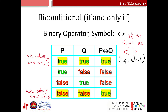A bi-conditional statement is a statement that contains the phrase 'if and only if' (IFF). It is equivalent to writing a conditional statement and its converse. For example: if an angle is 90 degrees, then the angles are complementing each other. Please take note that the equivalence sign and the bi-conditional sign are very different.